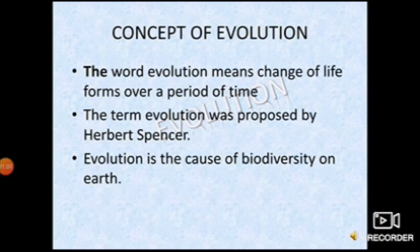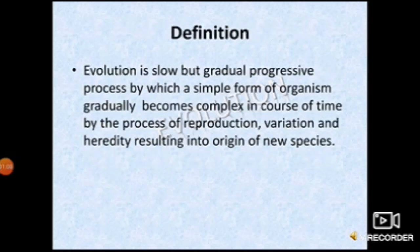Through the evolution process, we can see the variety of plants and animals, that is, biodiversity. The famous Greek philosopher Aristotle opined that analyzing the whole animal kingdom, one group is more advanced over the other, and the highly evolved and advanced group is human beings. Through the ages, complex types of life have evolved from simple types. So we can redefine evolution as: evolution is a slow but gradual progressive process by which a simple form of organism gradually becomes complex in the course of time by the process of reproduction, variation, and heredity.